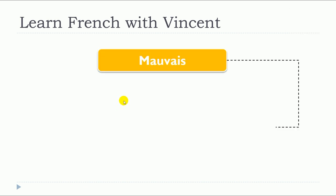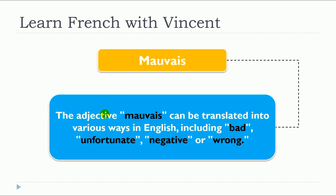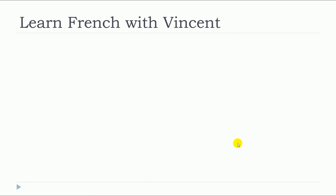This lesson is about « mauvais ». The adjective « mauvais » can be translated into various ways in English, including « bad », « unfortunate », « negative », or « wrong ».